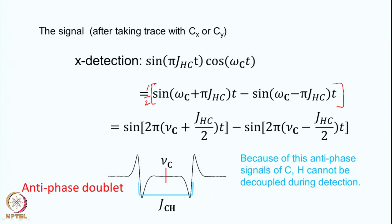During the detection period, these two antiphase signals are present as they are. If you try to decouple, these two signals will collapse on top of each other and cancel, giving zero signal. Therefore in this situation you cannot decouple during the detection period. The center of the doublet is the chemical shift, and the separation between the two components is the coupling constant J_CH.